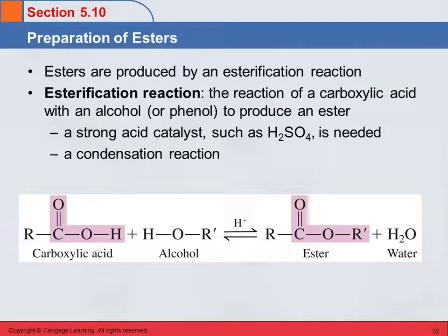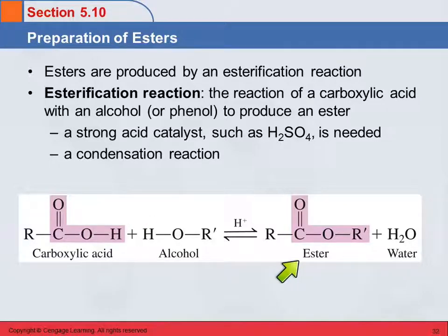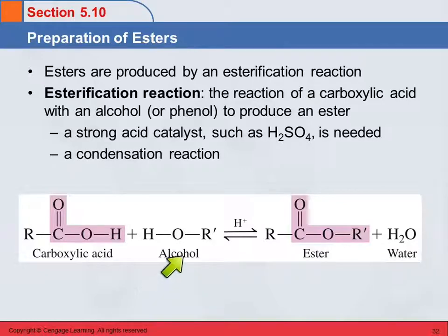Esters are produced by esterification — a reaction that creates an ester. It's a reaction of a carboxylic acid with an alcohol or a phenol, and it produces an ester. It requires a strong acid catalyst, and this is an example of a condensation reaction, where two compounds come together. A carboxylic acid and an alcohol combine to form an ester, and a molecule of water is released.